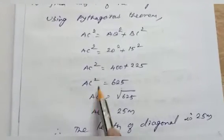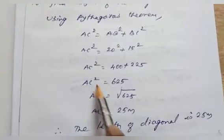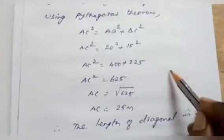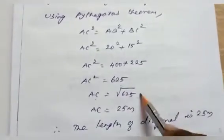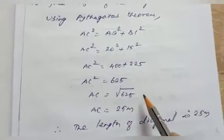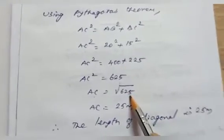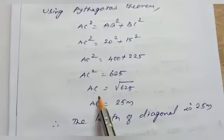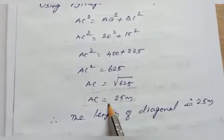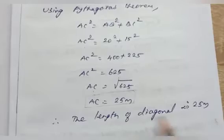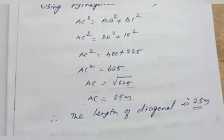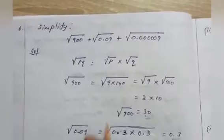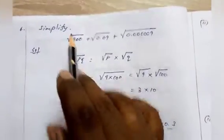To find the length of AC, we take AC = √625. The square root of 625 is 25. Therefore the length of AC is 25 meters. So the length of the diagonal is 25 meters.